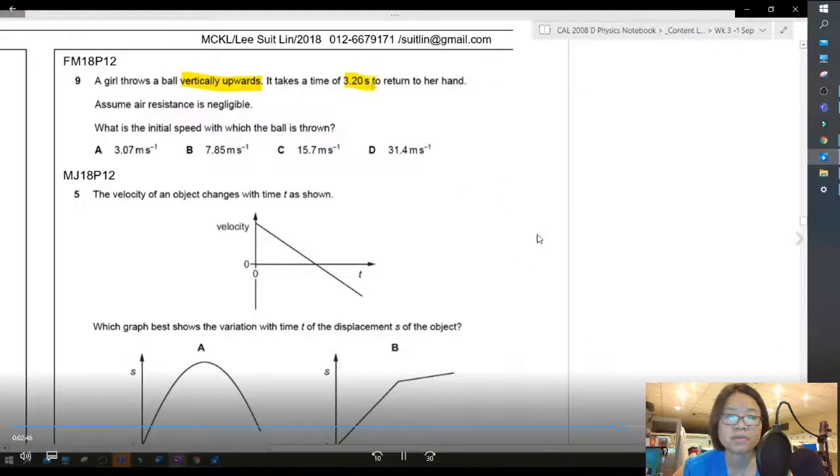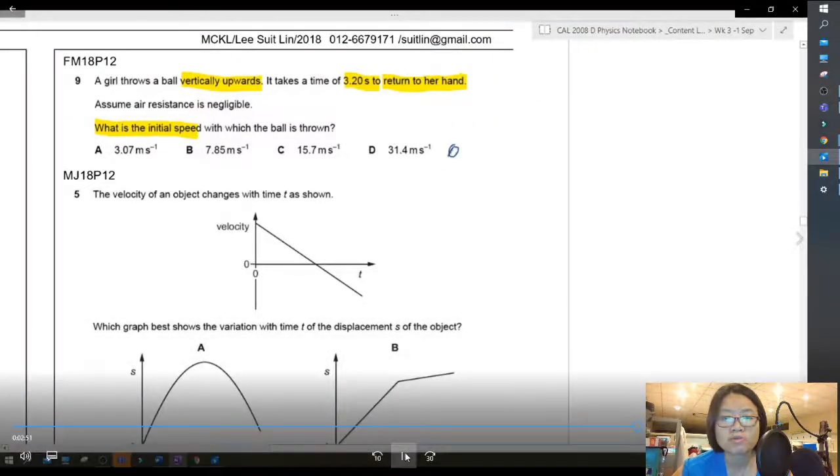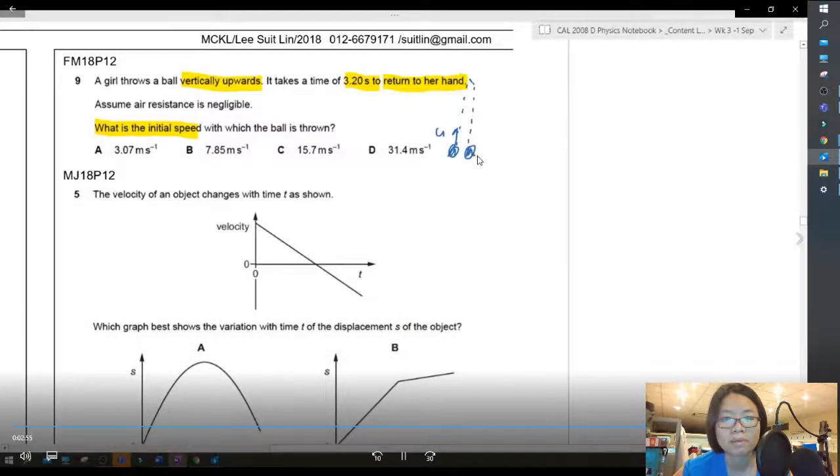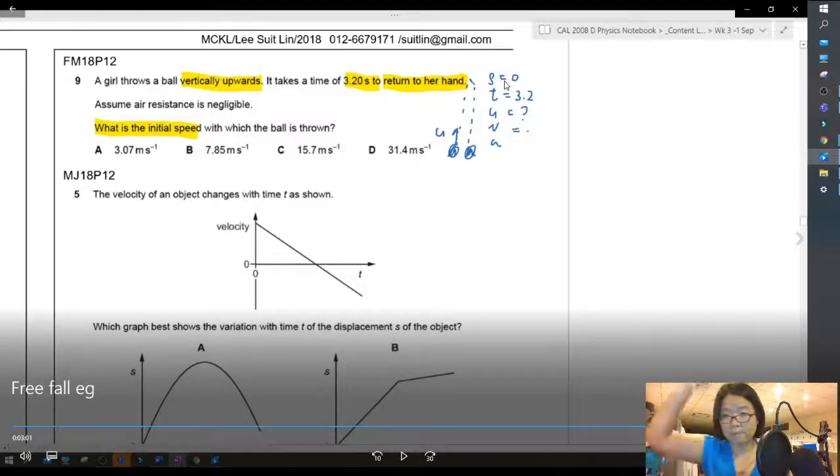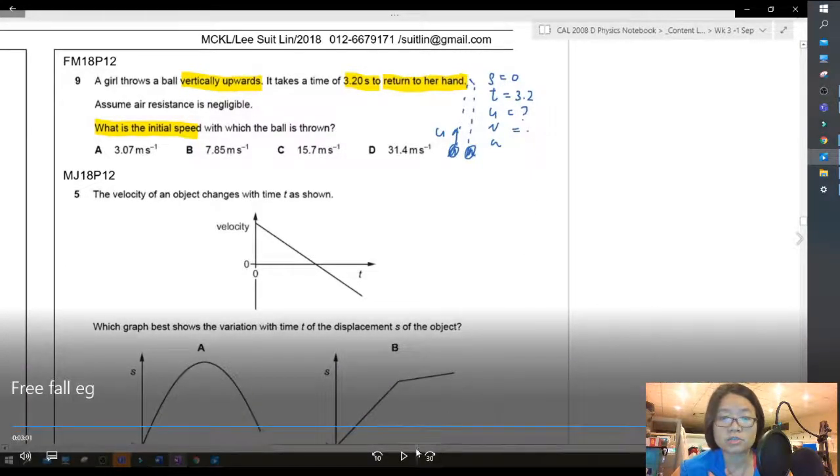This is from FM18, paper 1-2. A girl throws a ball vertically upward, and it takes a time of 3.2 seconds to return to her hand. So she throws the ball up and the ball will come down. No air resistance. What is the initial speed? So if you return back to the hand, the displacement traveled will be zero. Of course, you go up, come down, you return back to your hand already, right? And it took 3.2 seconds.